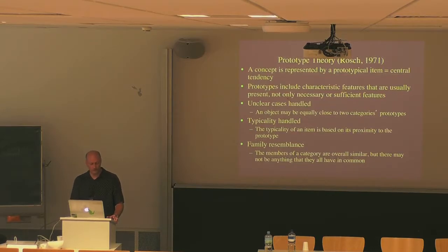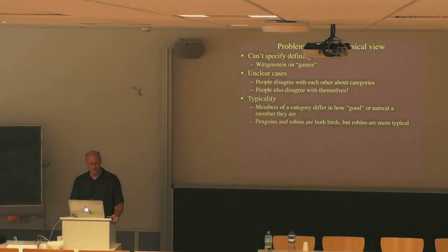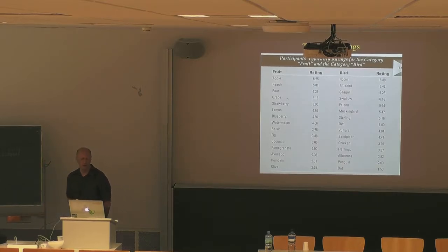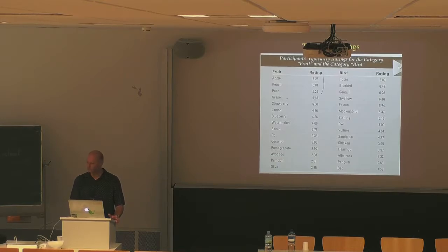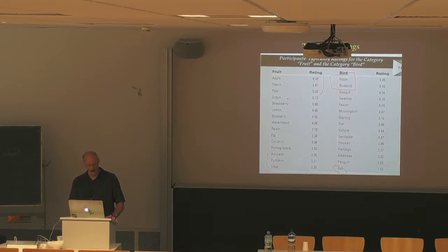Prototype researchers measured similarity between objects and the central tendency of categories by asking people to give explicit typicality ratings. For the fruit category, apple and peach are good upstanding members, while olive and pumpkin are atypical. For birds, robin and bluebird rate highly, whereas bat rates poorly as a bird, and penguin is actually a bird but not a very good one.